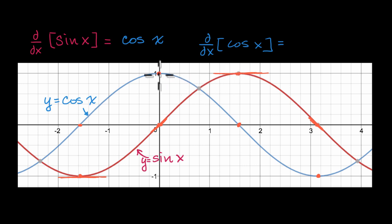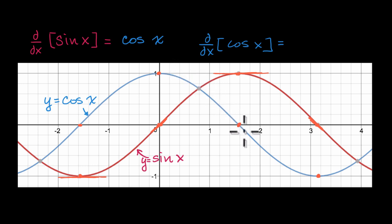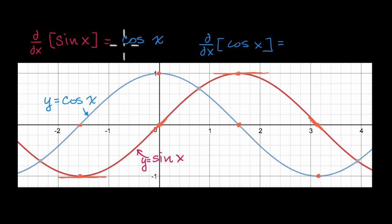Cosine of x — the value of the function — is one, and it becomes less and less positive all the way until it equals zero. You could keep doing that type of analysis to feel good about it. In another video, we're going to prove this more rigorously.